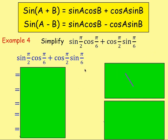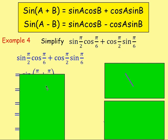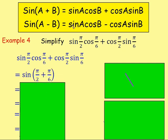Example 4: simplify sine(π/2) cos(π/6) plus cos(π/2) sine(π/6). To simplify it, we want to put it back into brackets. We've got sine cos cos sine with a plus, so we know it goes back to sine A plus B. Swap A with π/2 and B with π/6, giving us sine of π/2 plus π/6.